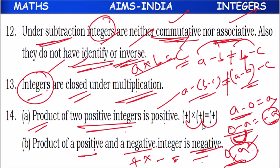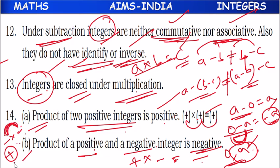Negative times negative is also positive. So: same signs multiplied give a positive result, and different signs multiplied give a negative result. Plus into plus is positive. Minus into minus is positive. Plus into minus is minus, and minus into plus is also minus.